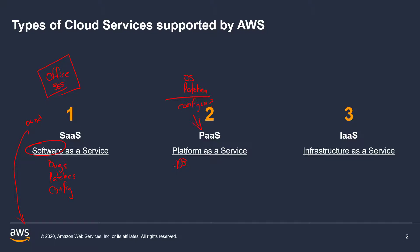Your different database services within AWS are going to be categorized as platform as a service, where you don't care about the infrastructure underlay or how the server is configured. You don't care how they've configured Microsoft SQL as overall software, but you do have access to create different table views and different architectures within the database so that it can be customized to your software.